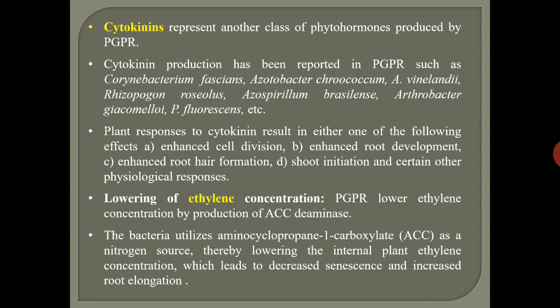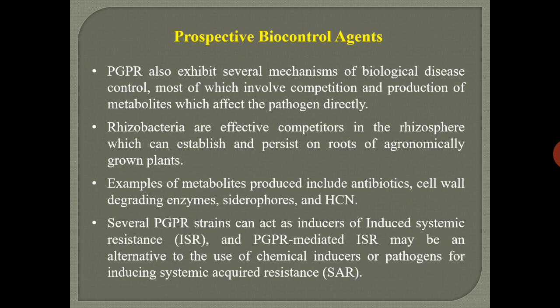Lastly, PGPR actually reduce ethylene production by production of ACC deaminase — ACC means 1-aminocyclopropane-1-carboxylate. Microbes utilize this as a nitrogen source and thereby deplete its availability for plant cells to produce ethylene. By this way, they decrease senescence and increase root elongation, helping in plant growth.